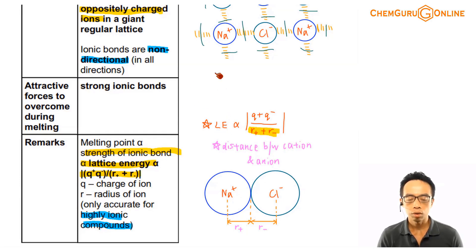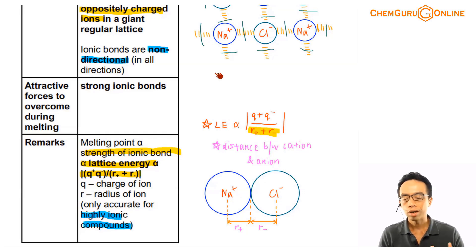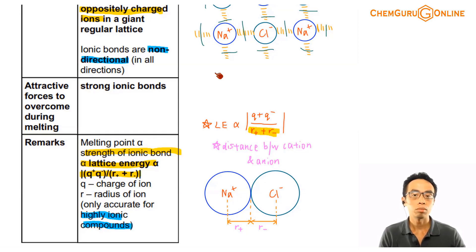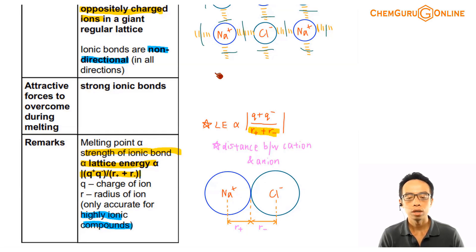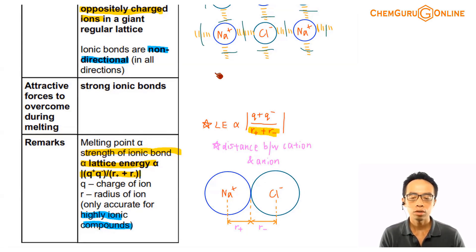We will formally talk about lattice energy under energetics, but for now we just say that lattice energy is a measure of the strength of the ionic bond. We are not so bothered about the formal definition of lattice energy right now — we will discuss this subsequently. So lattice energy is a measure of the strength of the ionic bond. How do we measure lattice energy?